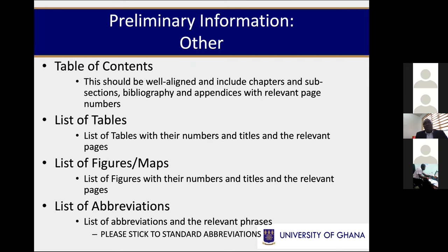Then you come to where you present the structure of the thesis document from a top-level point of view. Your table of contents gives pointers so people can find specific aspects of your thesis. The list of tables similarly points to the page where a specific table can be found, and the same applies to the list of figures and maps, and then the list of abbreviations that have been used in the thesis.